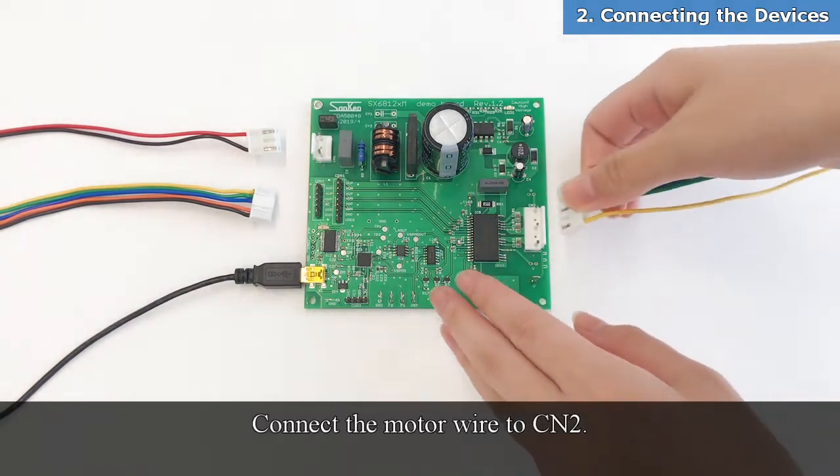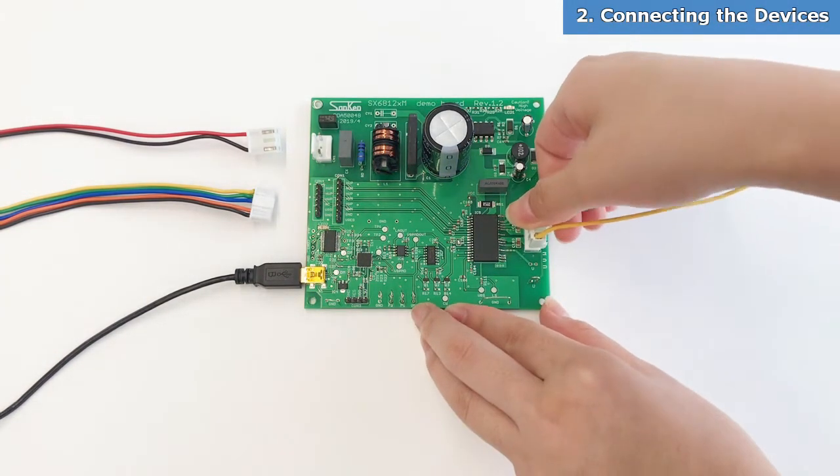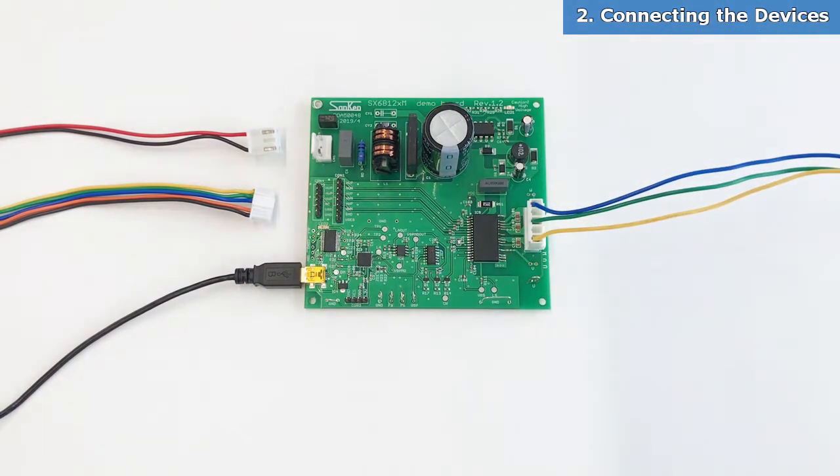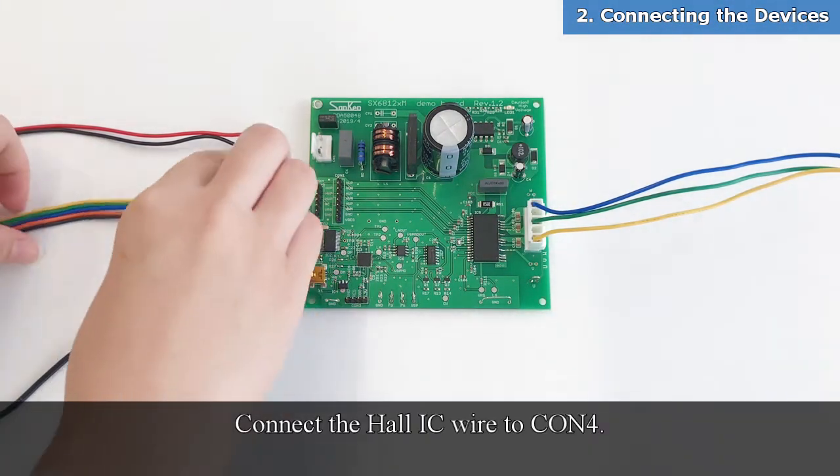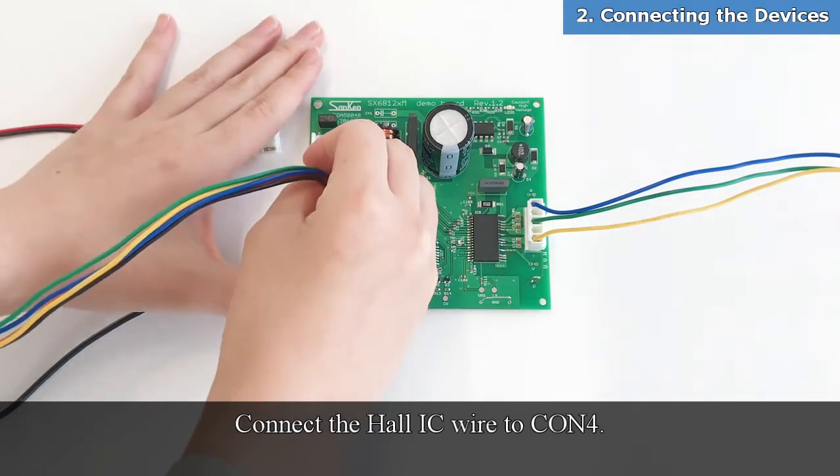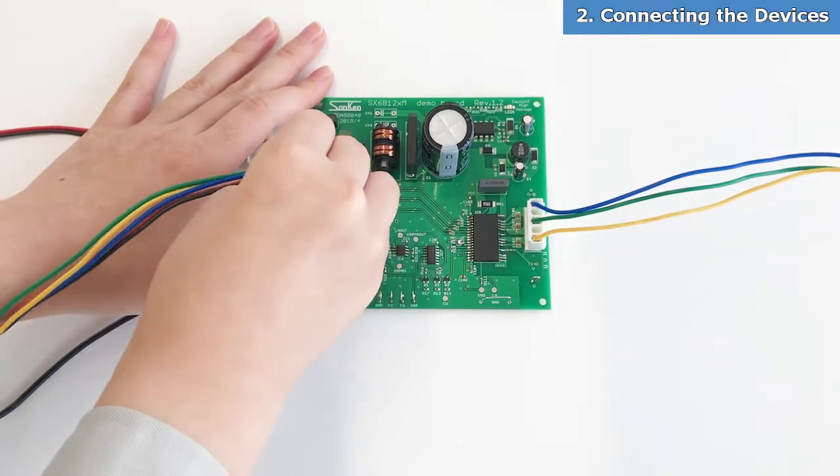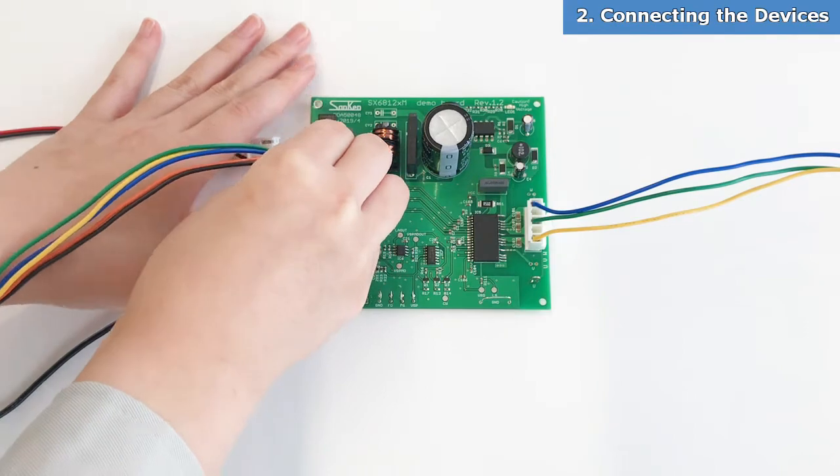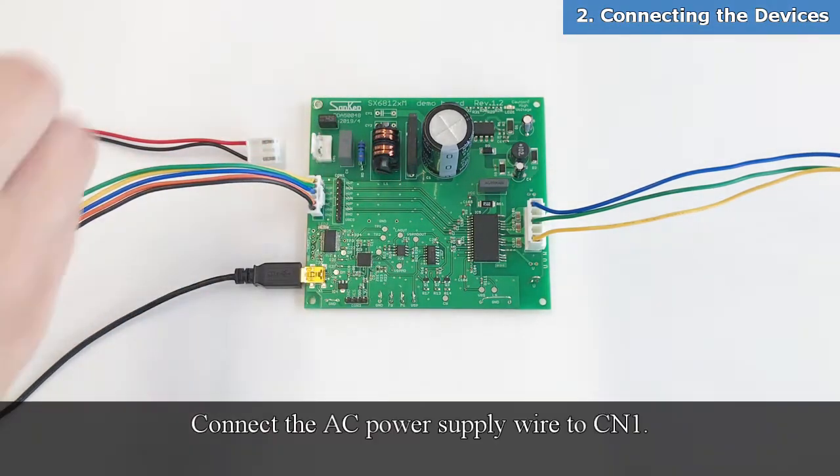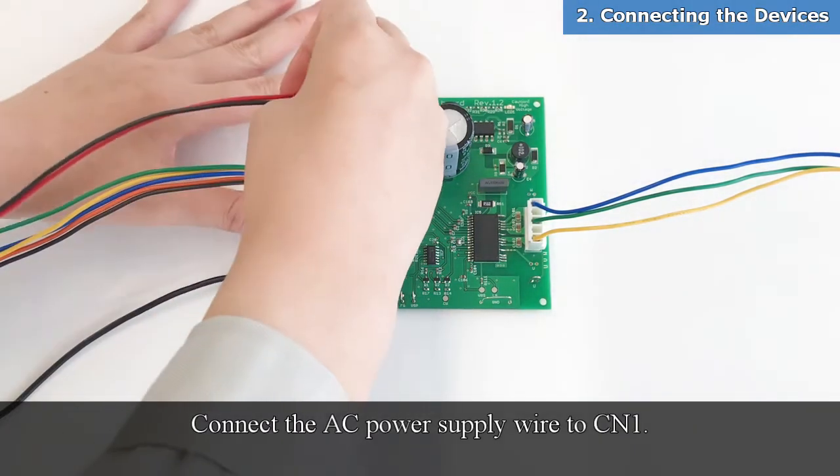Connect the motor wire to CN2. Connect the HAL AC power supply wire to CN1.